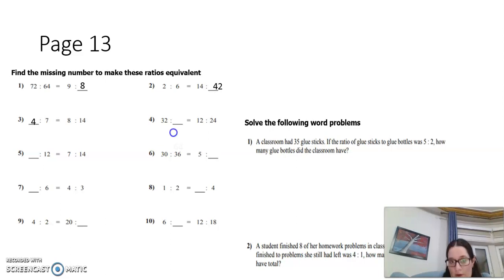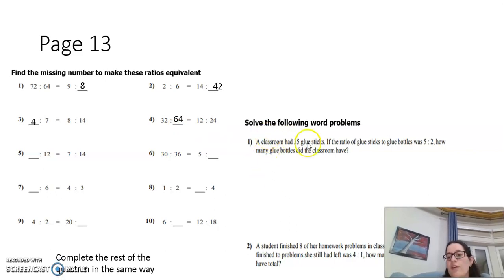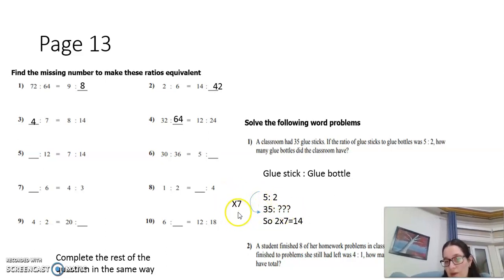Complete the rest of the question using the same way. Solve the following word problem: A classroom has 35 glue sticks. If the ratio of glue sticks to glue bottles was 5 to 2, how many glue bottles did the classroom have? Glue sticks to glue bottles is 5 to 2. The 5 to 2 becomes 35 to something. How does the 5 become 35? We are going to time it by 7, so 2 times 7 is going to be 14. So the class has 14 glue bottles.